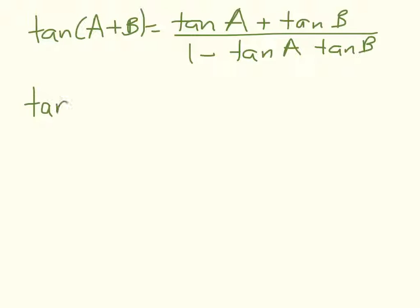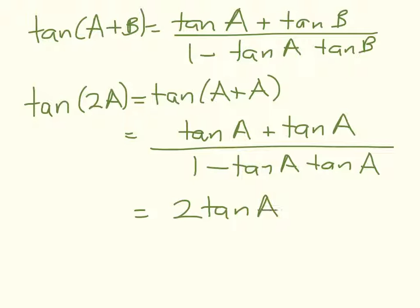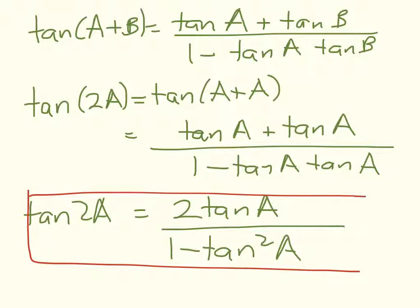So tan of 2A is going to equal tan of A plus A, which is going to be tan of A plus tan of A over 1 minus tan A tan A which is 2 tan A over 1 minus tan squared A. So that's tan of 2A. So those three are my basic double-angle formulae.